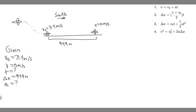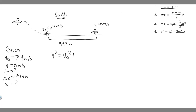Looking at the kinematic equations, equations 1, 2, and 3 all contain the variable t, which we don't know, so we can't use those. Equation 4 contains initial velocity, final velocity, delta x, and acceleration — and we have v sub zero, v, and delta x, so the only unknown is a. We'll use: v squared equals v sub zero squared plus 2a times delta x.